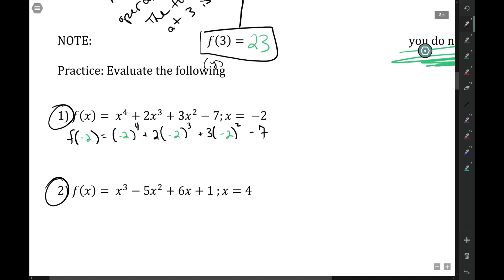All right. Let's see if I can do it in my head. Negative two to the fourth is two times two, which is four times two is eight, times two is 16. Two times two to the third, that would be negative eight. Plus three times negative two squared would be four, minus seven.